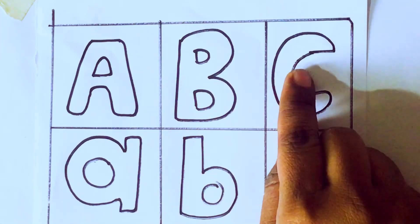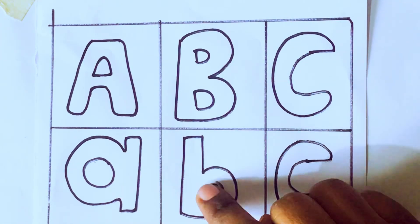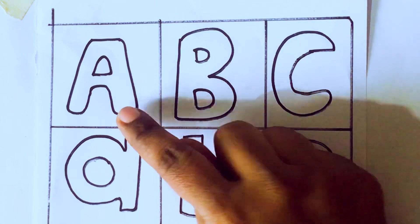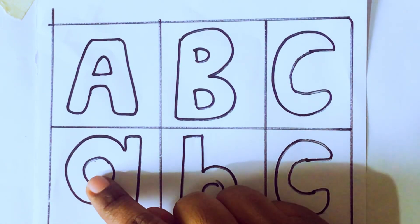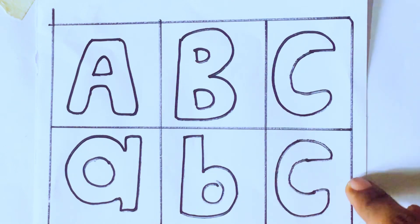A, B, C and a, b, c. A for apple, B for ball, C for cat. A for ant, B for pad, C for cup.